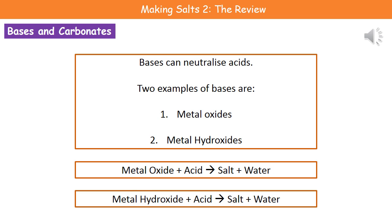Two examples of bases are metal oxides and metal hydroxides. The two word equations we will see are: metal oxide plus acid makes a salt and water, and metal hydroxide plus acid makes salt and water. So all we need to remember is that whatever our base is, it will always react with the acid to make a salt and water.